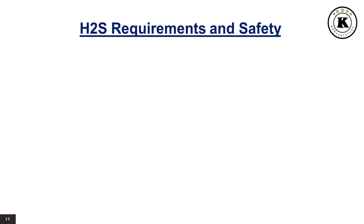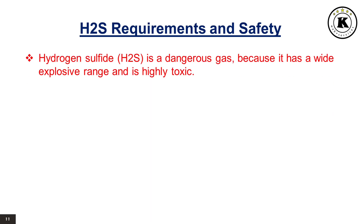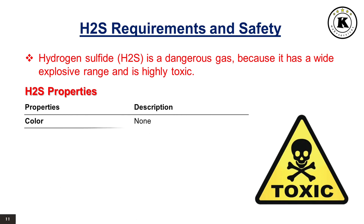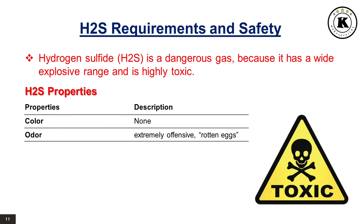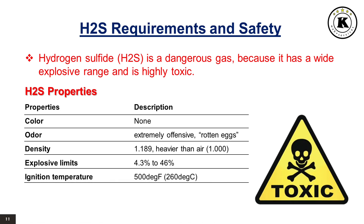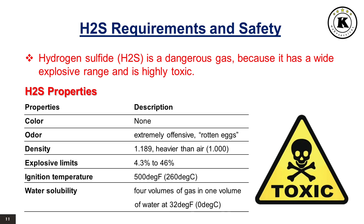H2S requirements and safety: Hydrogen sulfide (H2S) is a dangerous gas because it has a wide explosive range and is highly toxic. H2S properties: Color — none; Odor — extremely offensive, smells like rotten eggs; Density — 1.189, it is heavier than air; Explosive limits — 4.3% to 46%; Ignition temperature — 500°F or 260°C; Water solubility — 4 volumes of H2S gas are soluble in one volume of water at 32°F or 0°C.